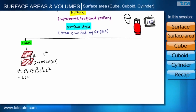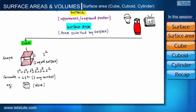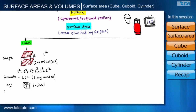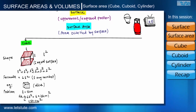We get 6L squared, so 6L squared is the total surface area of a cube having length L, where L can be any number. A real-life example is a dice — it has total six surfaces, all surfaces have the same area, and all surfaces are in the shape of a square.